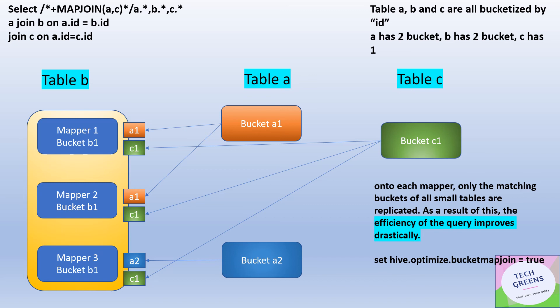Also, to enable the Bucket Map Join, we'll have to set the property hive.optimize.bucketmapjoin equals true. So by default it is not enforced. So we'll have to set this property to true. This is how Bucket Join internally works. Only the specific buckets from the different tables involved in the join are replicated onto specific mappers during the mapping stage.